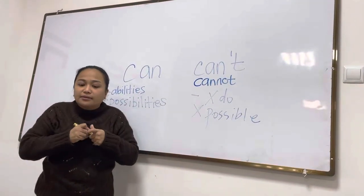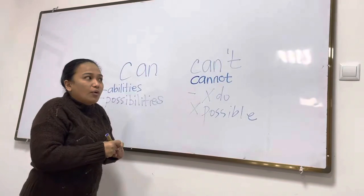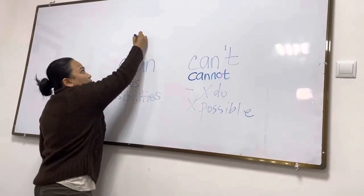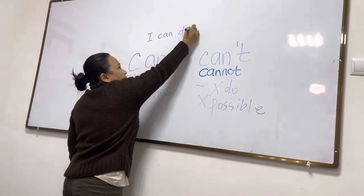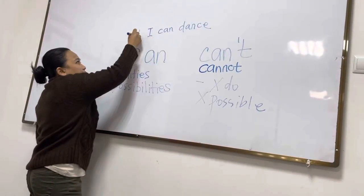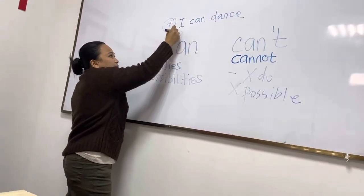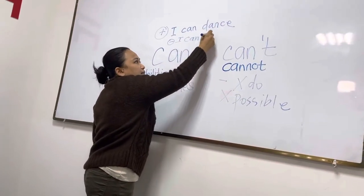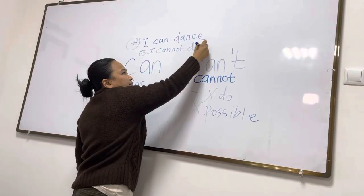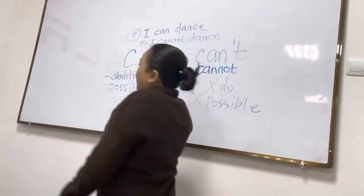It's very easy. Now, how will it be in the question form? Look. I can dance. That's the positive. And the negative would be, I cannot dance.